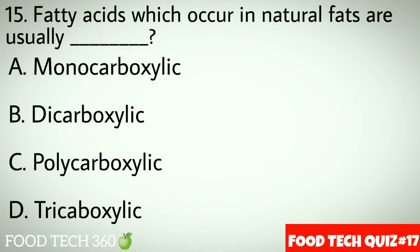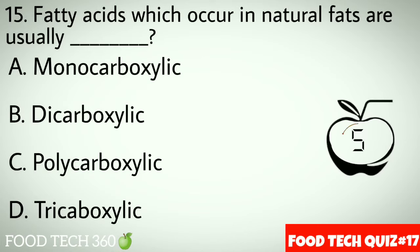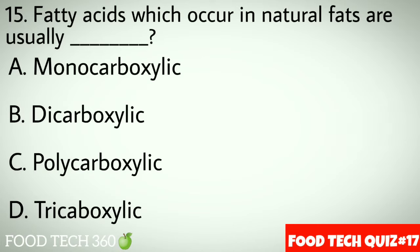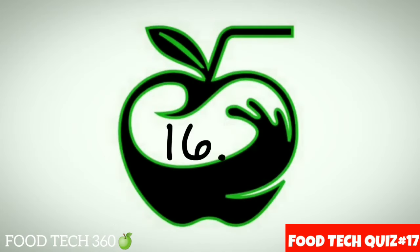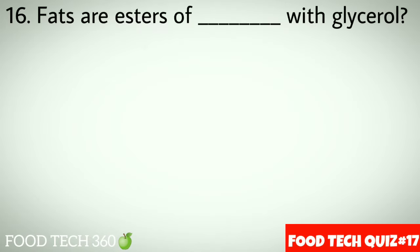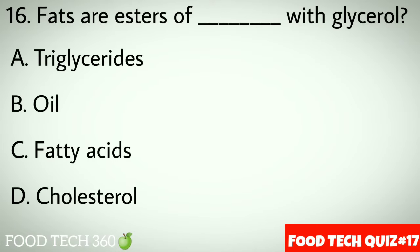Question number 15: Fatty acids which occur in natural fats are usually dash. Options: A. Monocarboxylic, B. Dicarboxylic, C. Polycarboxylic, D. Tricarboxylic. Correct answer: A. Monocarboxylic.